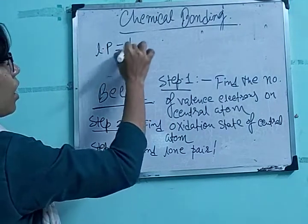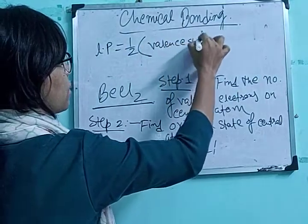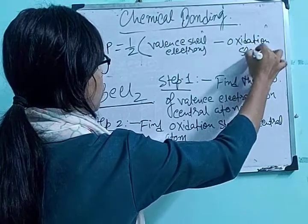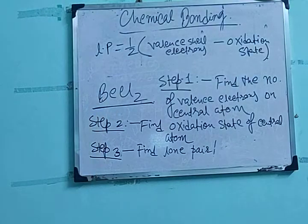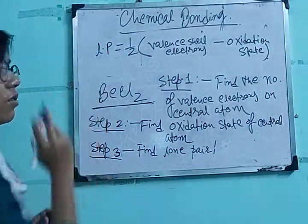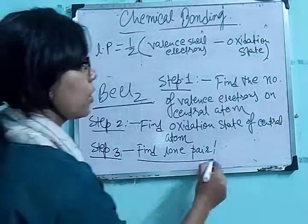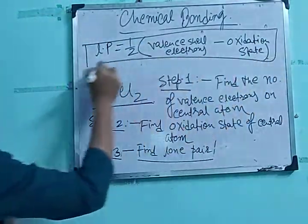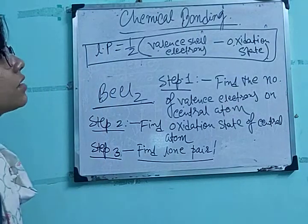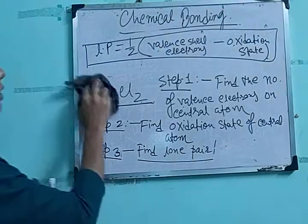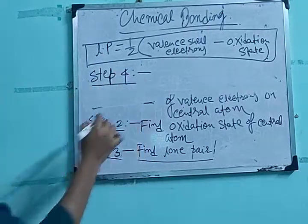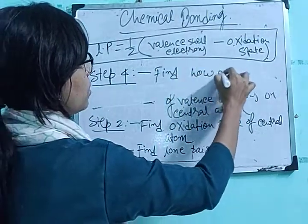The formula is: lone pairs = (½ × valence electrons) − oxidation state. So we find valence electrons in step 1, find oxidation state in step 2, and apply this formula to get lone pairs. Step 4 is: find the number of bond pairs — that is, how many sigma bonds are present.